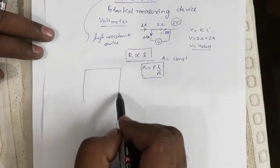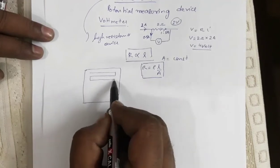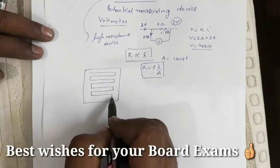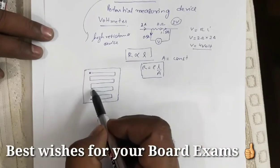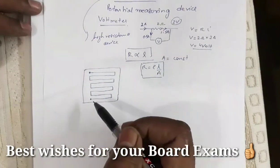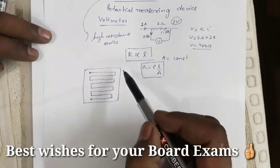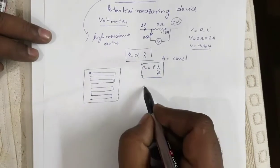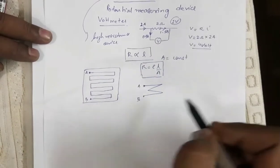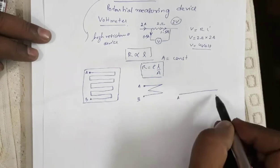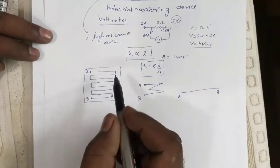Basically, the potentiometer is an arrangement wherein you have a wooden board and wires of one meter length are arranged on it. These are the two terminals — one meter, two meter, three meter up to eight meters of wire. In your exam, the circuit of a potentiometer can be represented in different ways: as the actual arrangement, or as terminals A and B, or simply as a straight wire. All these are symbols for the potentiometer.